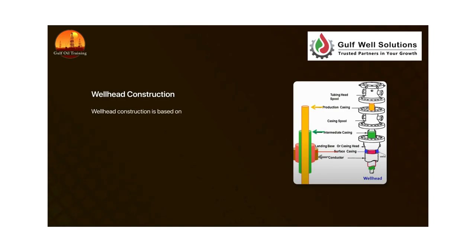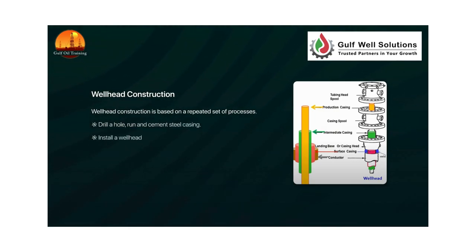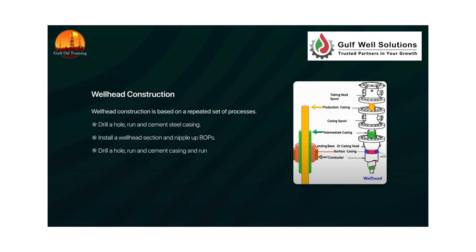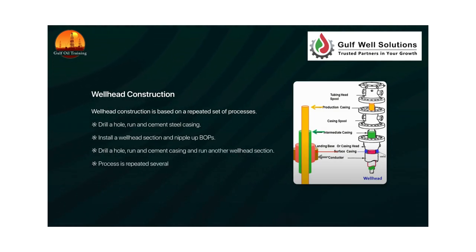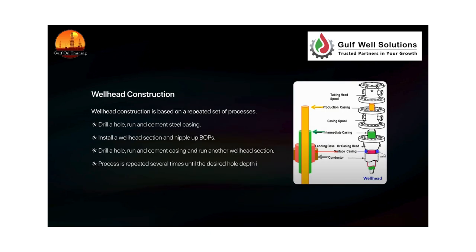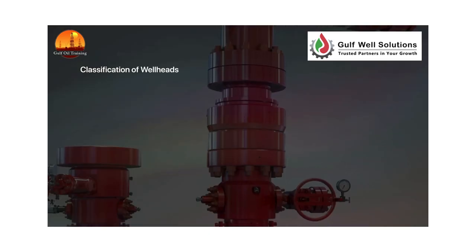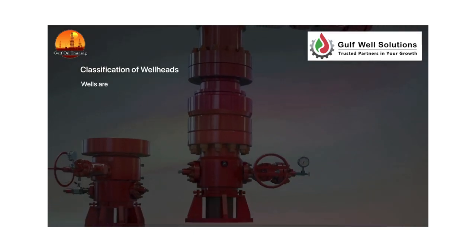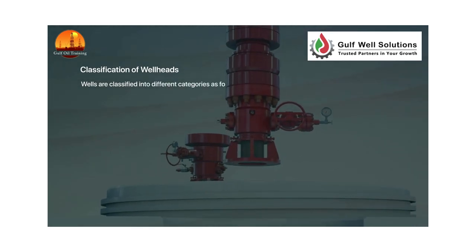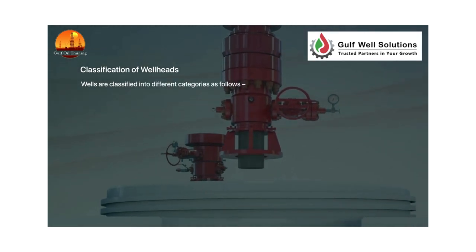Wellhead construction is based on a repeated set of processes: drill a hole, run and cement steel casing, install a wellhead section, and nipple up BOPs. Then drill a hole, run and cement casing, and run another wellhead section. This process is repeated several times until the desired hole depth is reached.